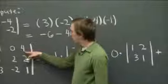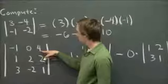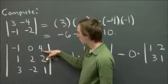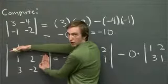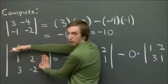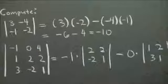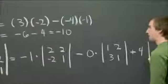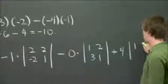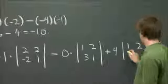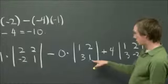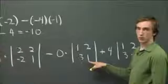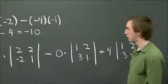Now, finally, we have to walk over here. And we have to take 4 times the minor, which we get by covering up the row and column containing 4. 1, 2, 3, minus 2. And now, notice that these are just 2 by 2 determinants. And we can just compute those the same way we did earlier.